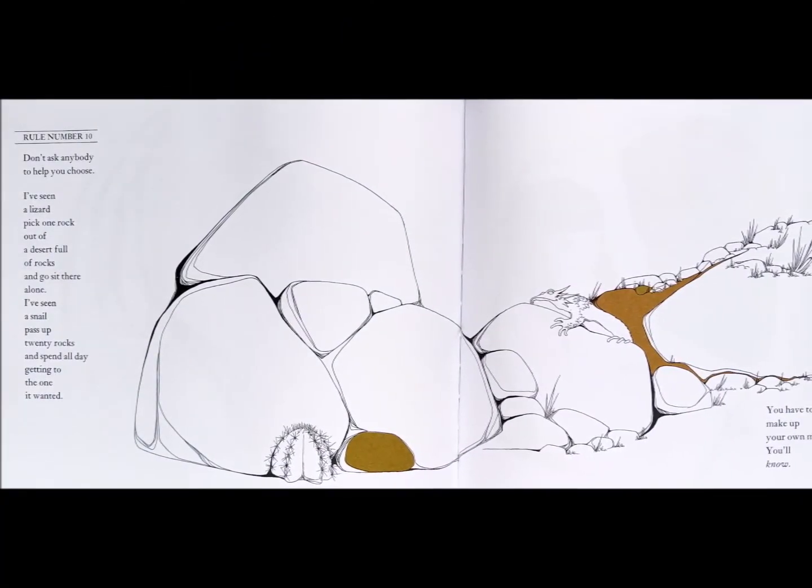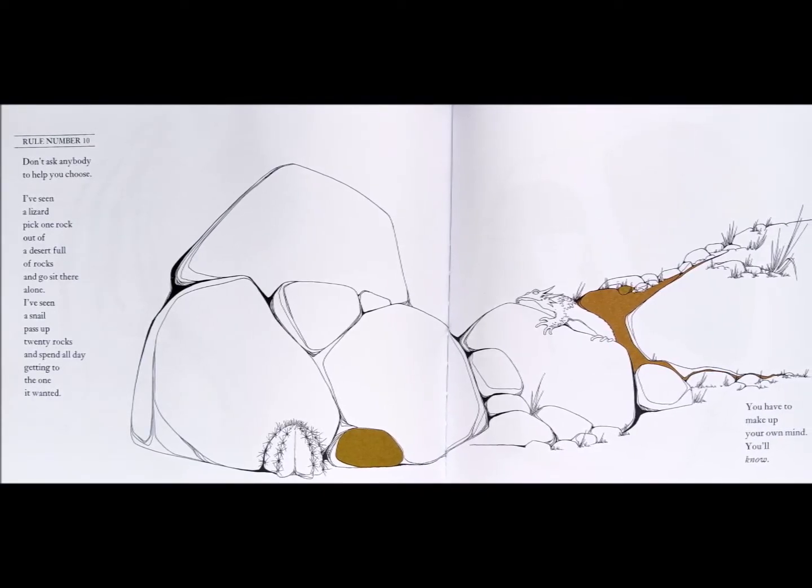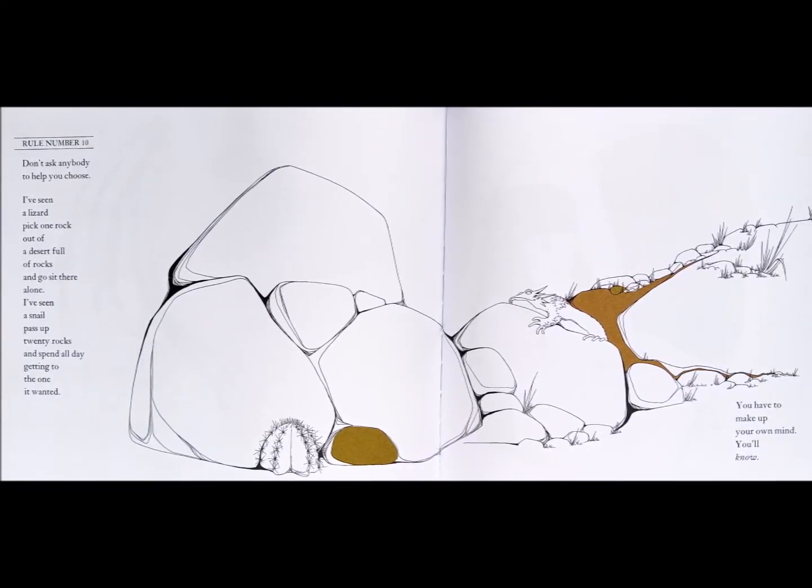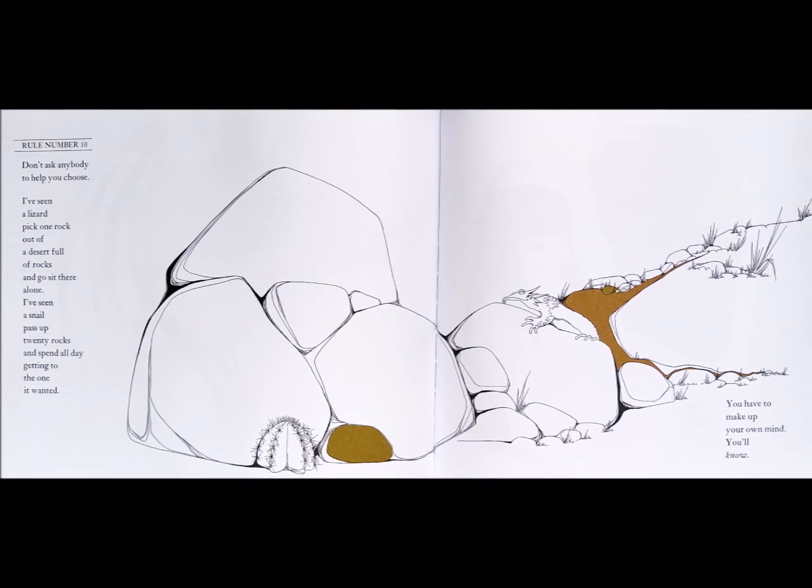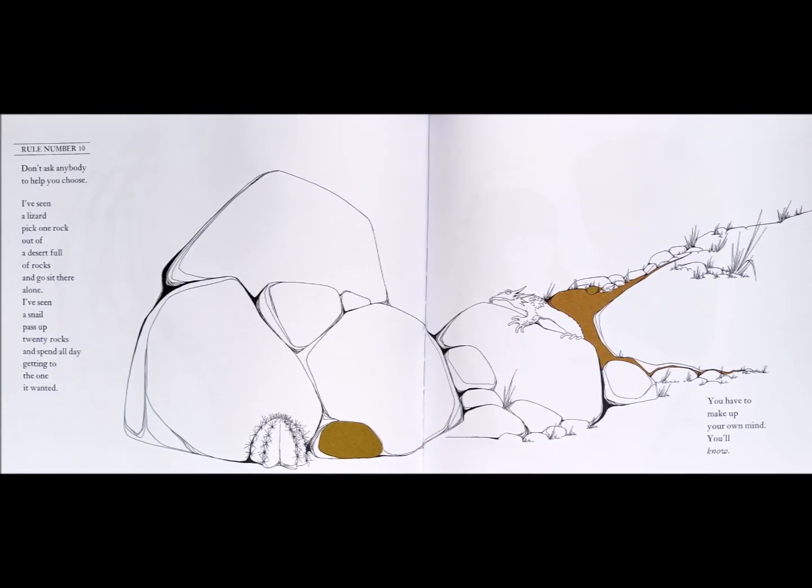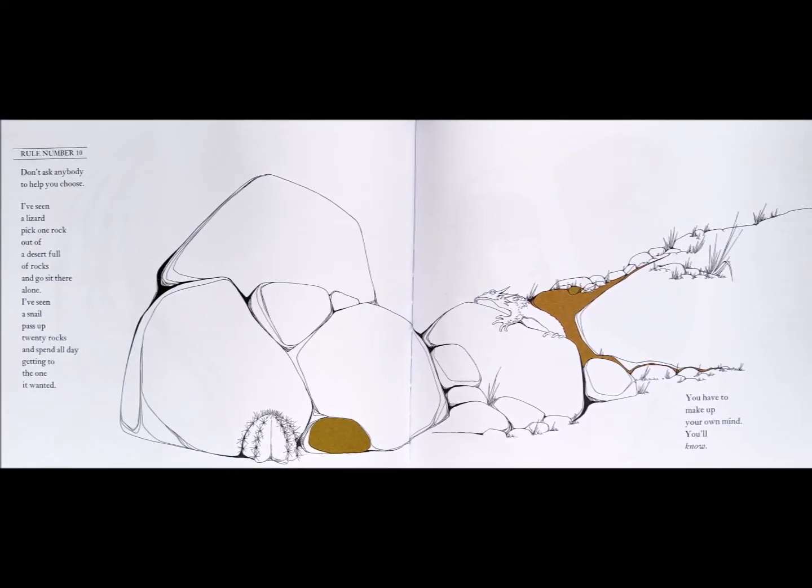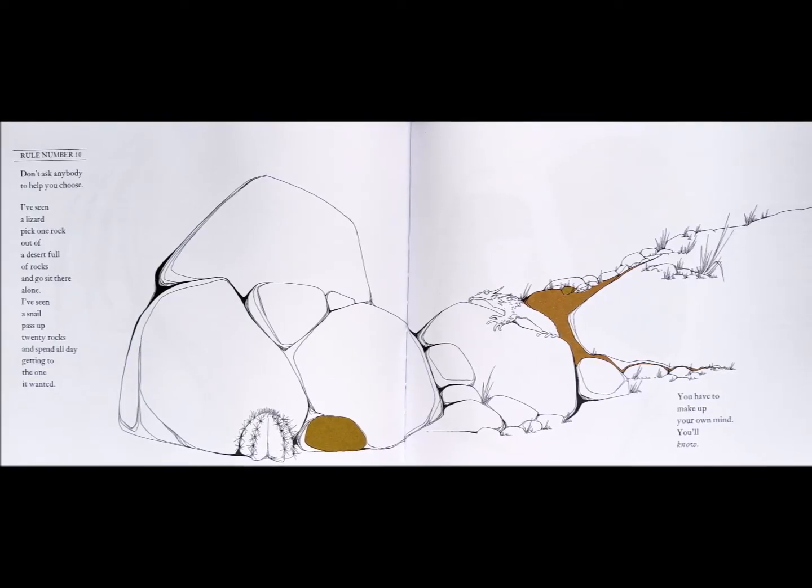Rule number ten. Don't ask anybody to help you choose. I've seen a lizard pick one rock out of a desert full of rocks and go sit there alone. I've seen a snail pass up twenty rocks and spend all day getting to the one it wanted. You'll have to make up your own mind. You'll know.